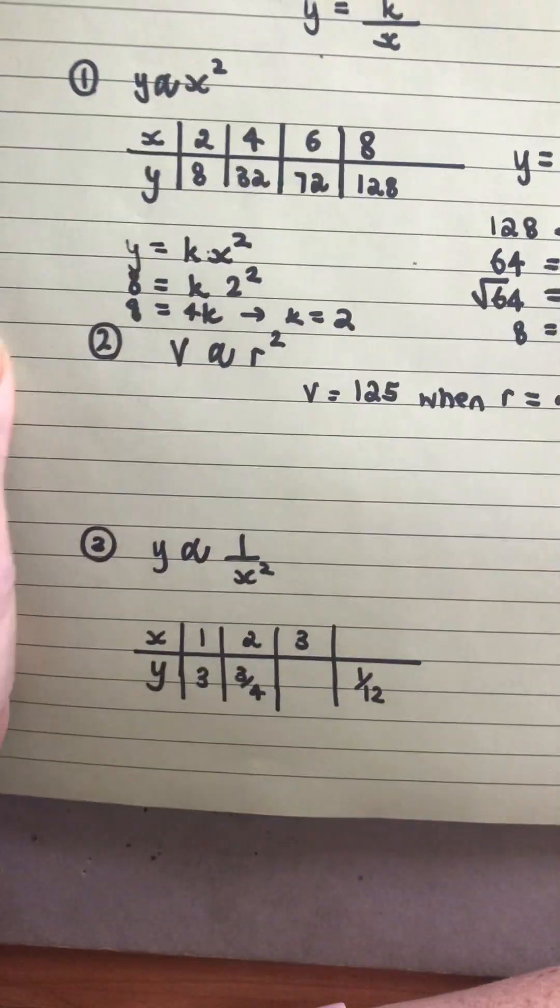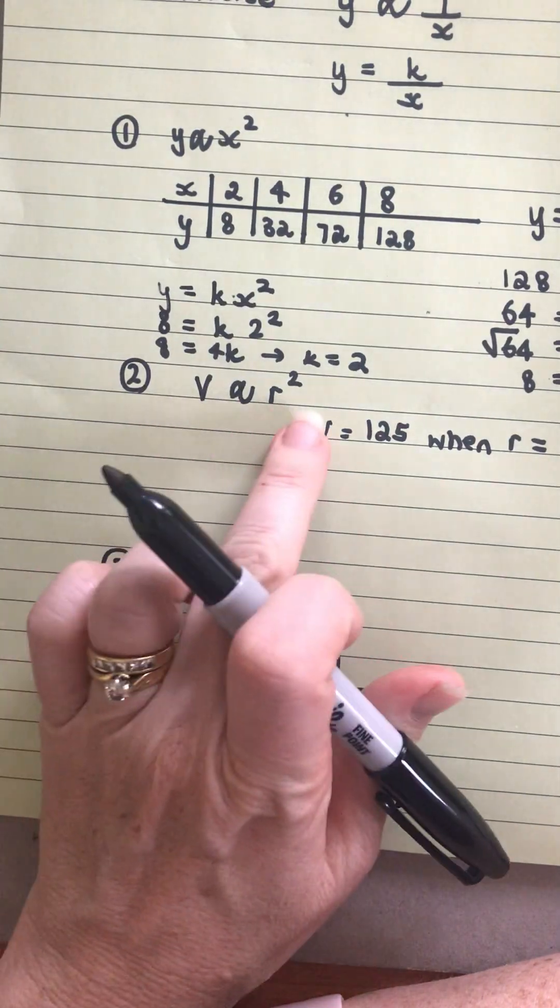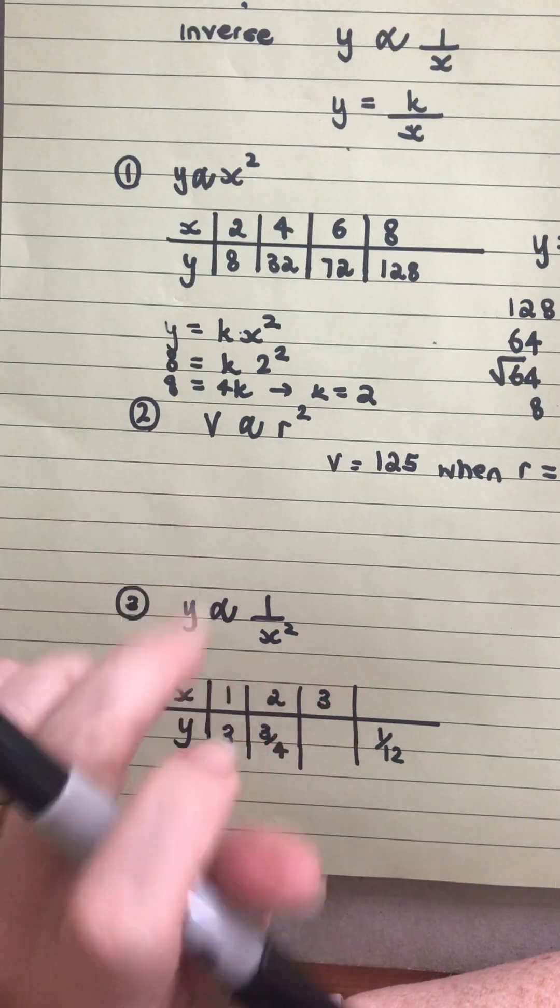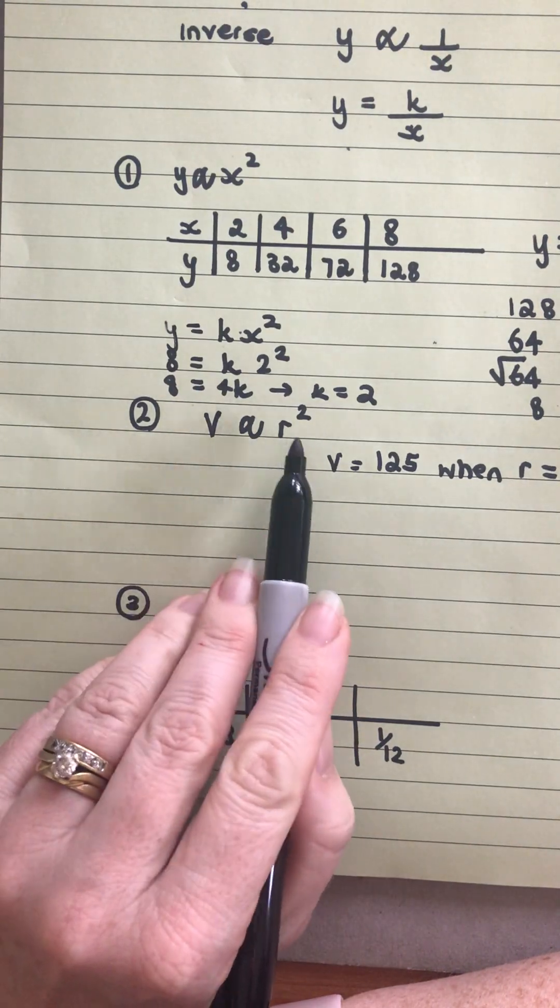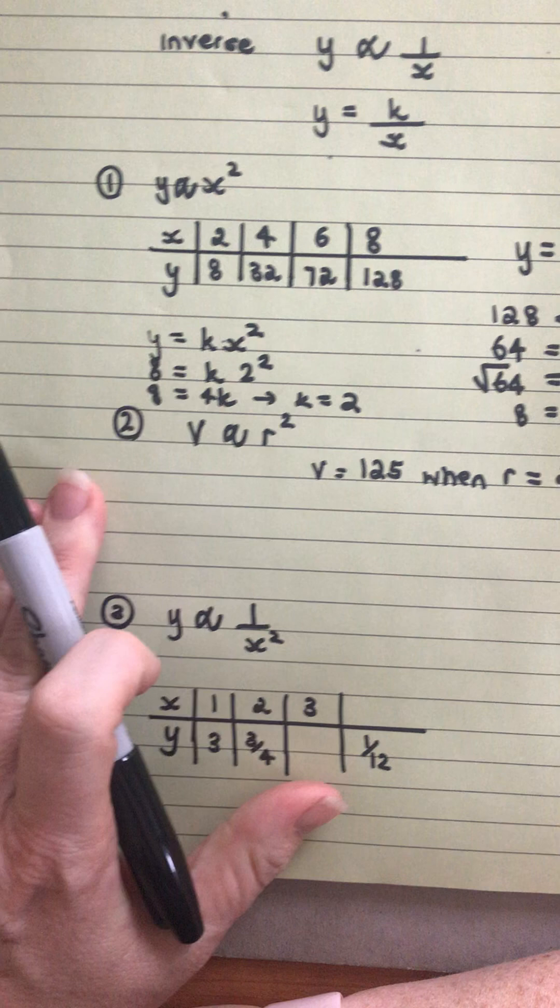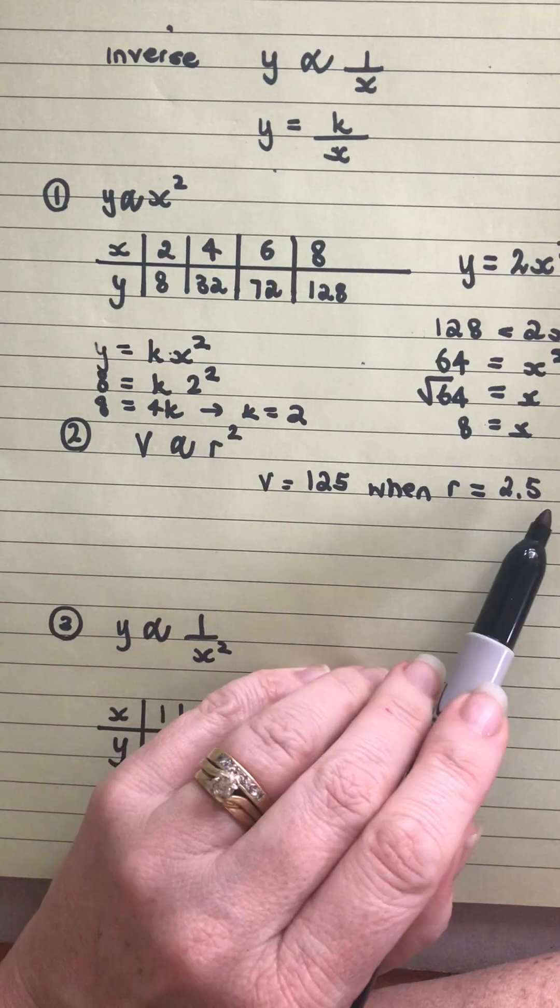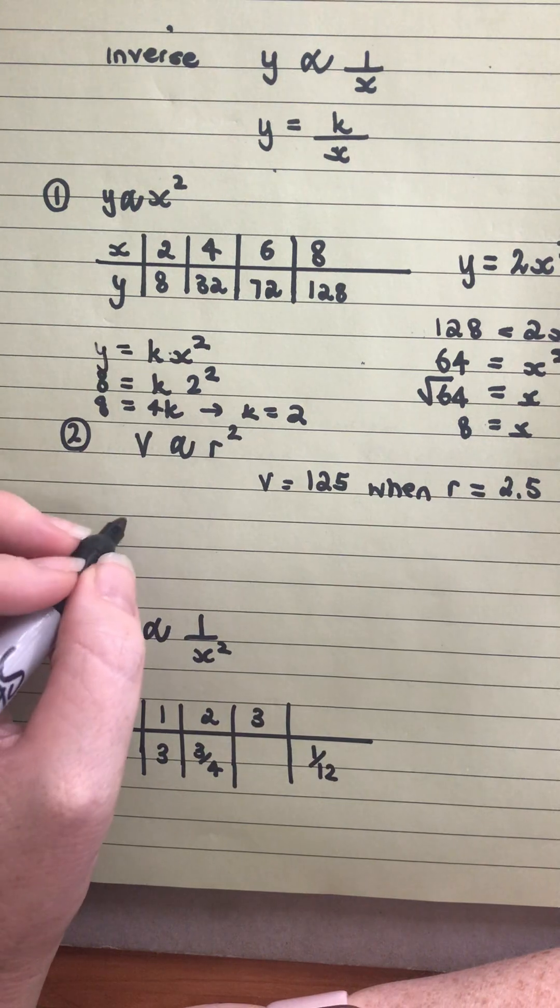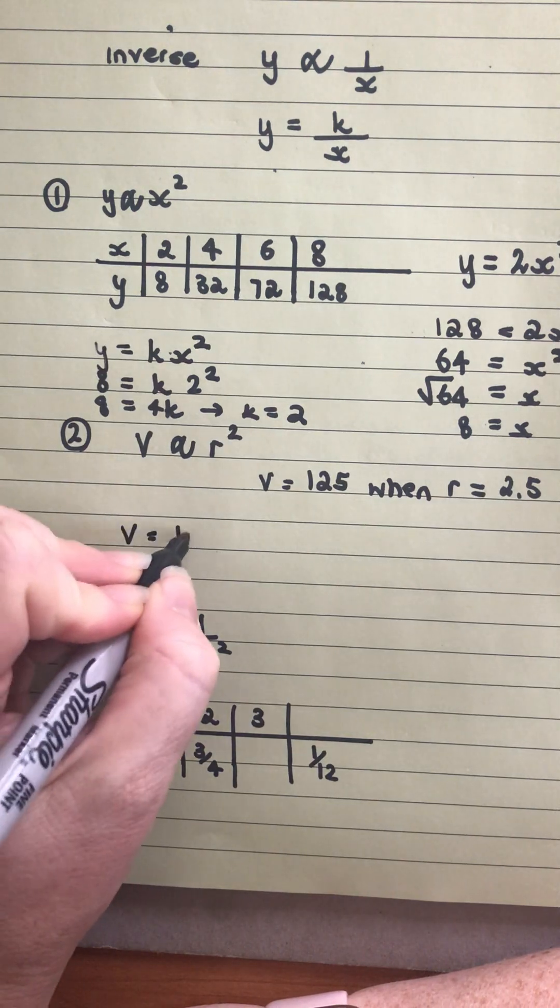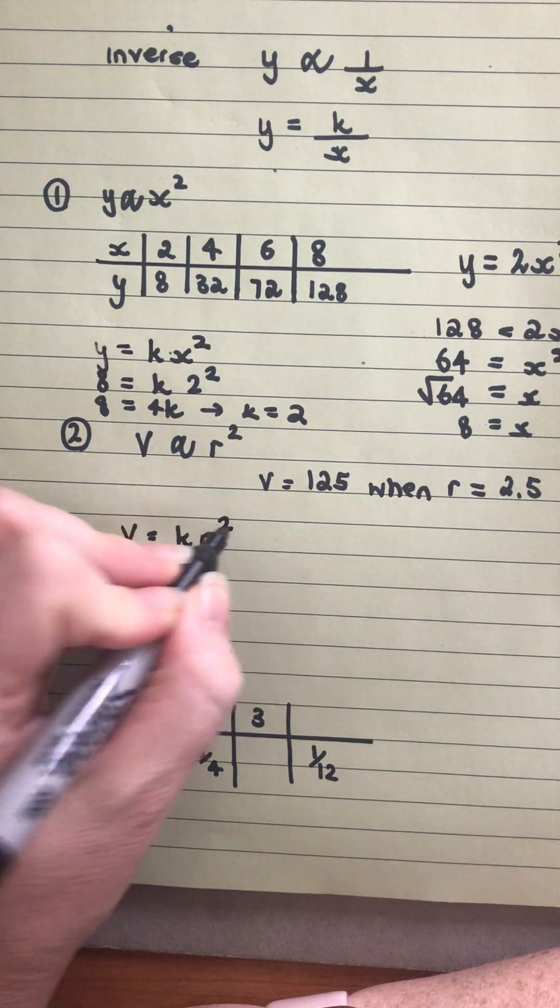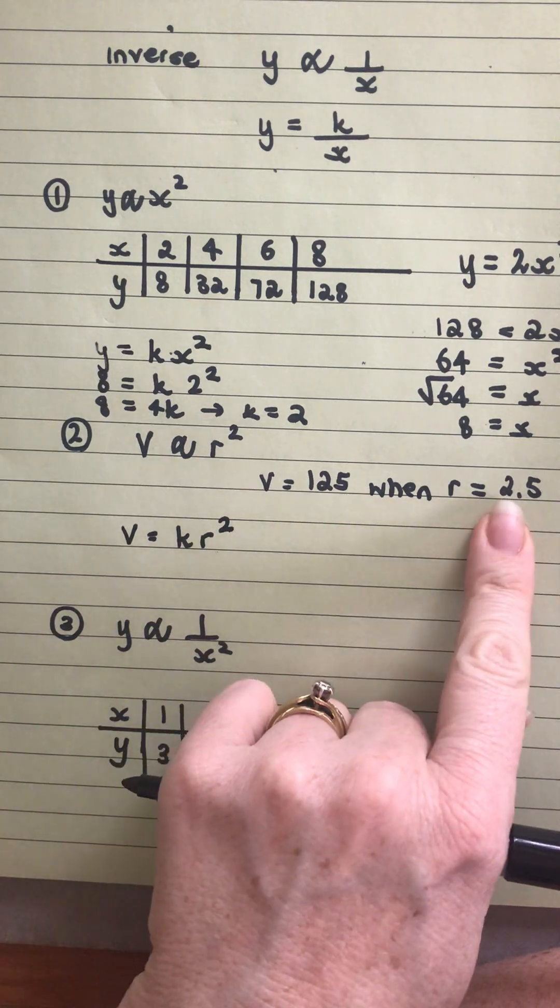In the next one, there's a different format that we've been given. We've got that the volume is proportional to r squared. Then it says when v is equal to 125, r is equal to 2.5. So when we write our v equals kr squared, this is going to allow us to work out what the k is.